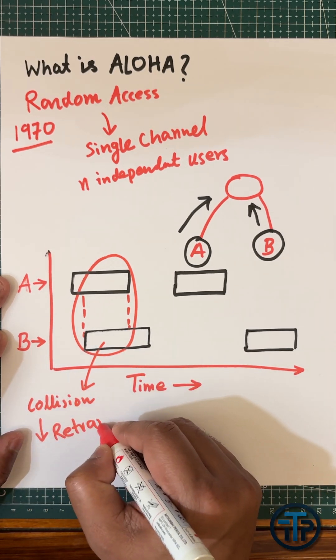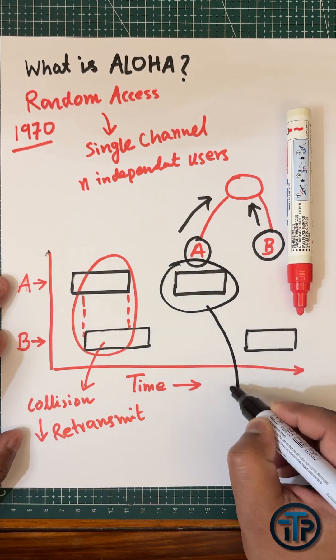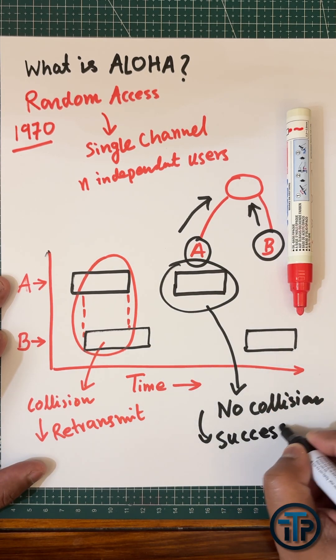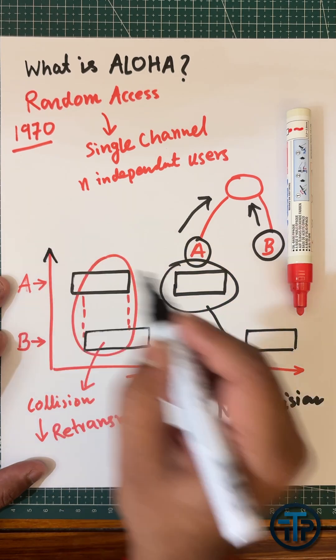must be some kind of collision. If there is a collision, then you have to retransmit. If there is no collision, it means the packet has been delivered successfully.